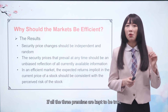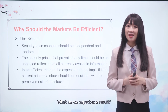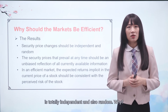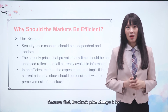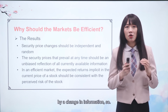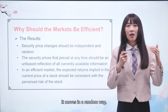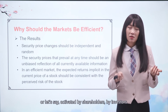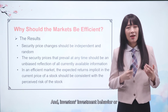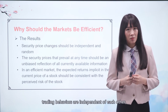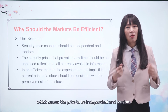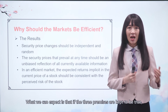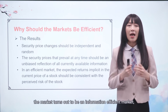If all three premises hold true, what do we expect as a result? First, security price changes are totally independent and random, because stock price changes are led by changes in information which move in a random way, and investors' trading behaviours are independent of each other, which causes the price to be independent and random. Second, the market turns out to be an information-efficient market, where the current price is a true reflection of all available information regarding a security.